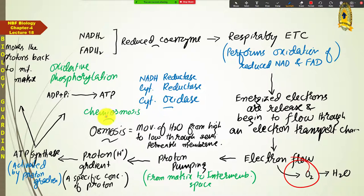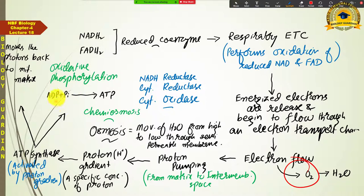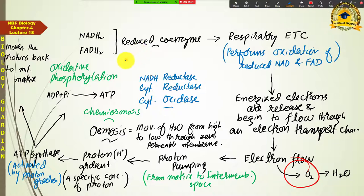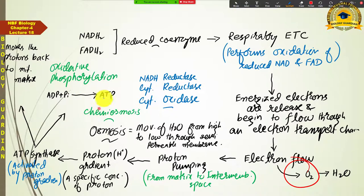Chemiosmosis is the mechanism of ATP generation during oxidative phosphorylation as well as during photophosphorylation. In photosynthesis, chemiosmosis also involves electron flow — from chlorophyll in the case of photosynthesis, and from NADH₂/FADH₂ in the case of respiration. Photophosphorylation is an event of photosynthesis, while oxidative phosphorylation is an event of aerobic respiration. Photophosphorylation occurs only in plants, while oxidative phosphorylation occurs in both.